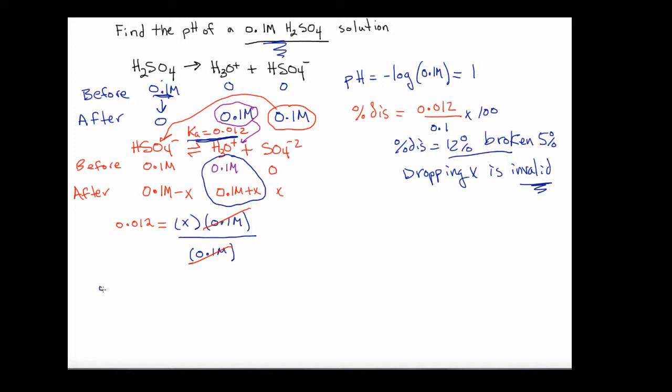I'm going to set up my equilibrium expression over again. It's going to be 0.012, and it's going to be equal to X times 0.1 molar plus X for the hydronium over 0.1 molar minus X for the HSO4-. You can see that we've got a quadratic equation here. I'm going to let the viewer take care of the algebra to simplify the situation. Here's what the binomial is going to look like. We're going to end up with X squared plus 0.112X minus 0.0012, and the whole thing is equal to 0.